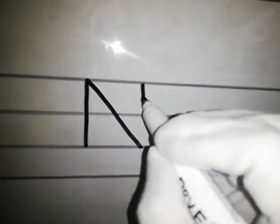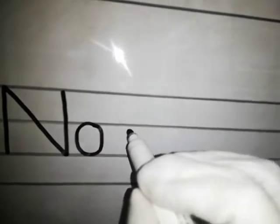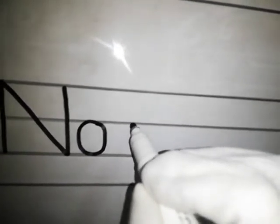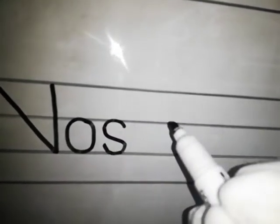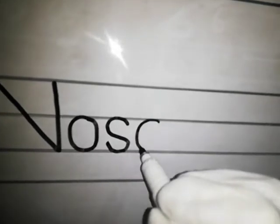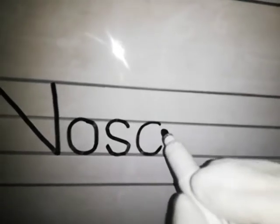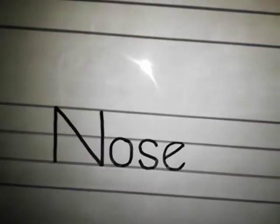N has a straight line, a slanting line, and another straight line. O is a full circle between the center two lines. S is written between the two grass lines — keep S within the lines, do not go outside. The last letter is E — a half circle with a slanting line. N, O, S, E — nose.